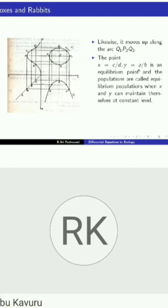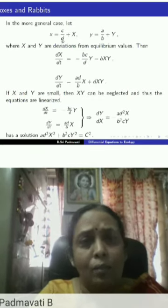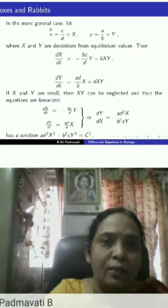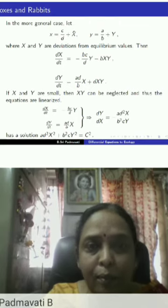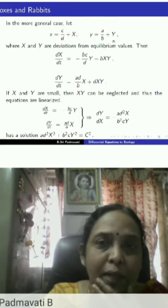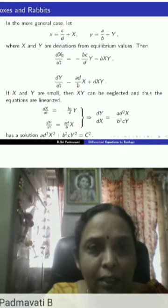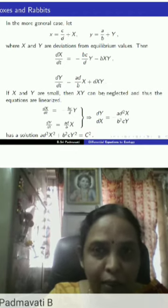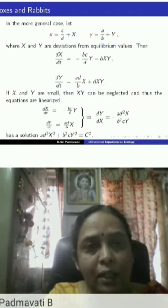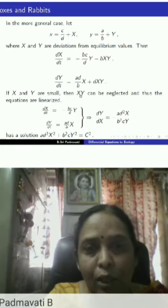The point S is an equilibrium point, and the populations at x = c/d, y = a/b are called equilibrium populations — x and y can maintain themselves at a constant level. For the more general case, considering small deviations from equilibrium values: let x = c/d + X and y = a/b + Y. Writing the new equations in terms of X and Y yields again non-linear differential equations, but since X and Y are assumed small, the XY term can be neglected.